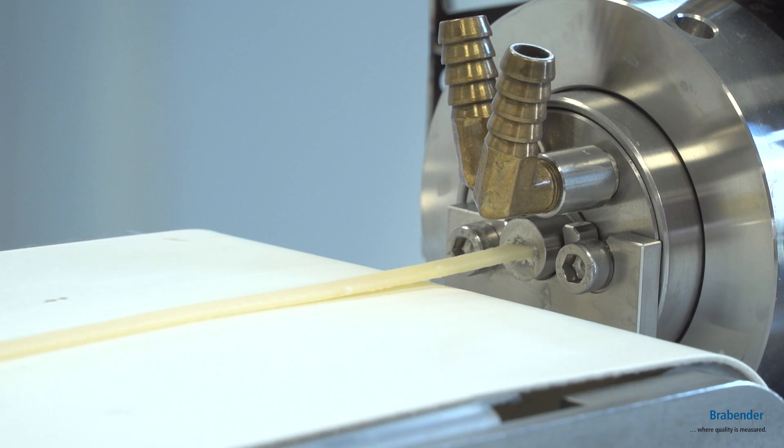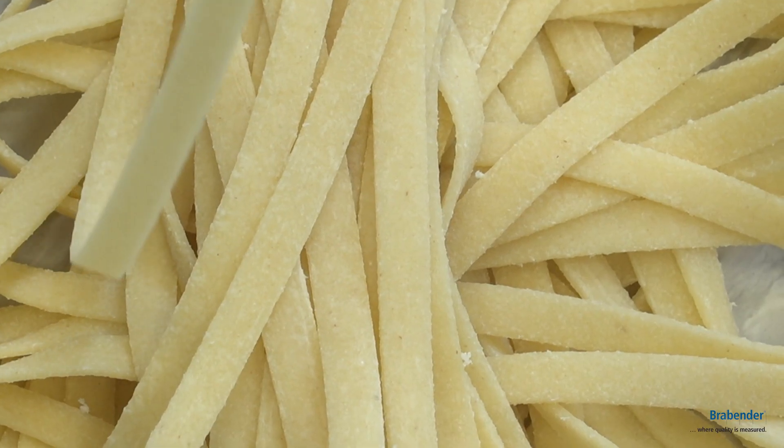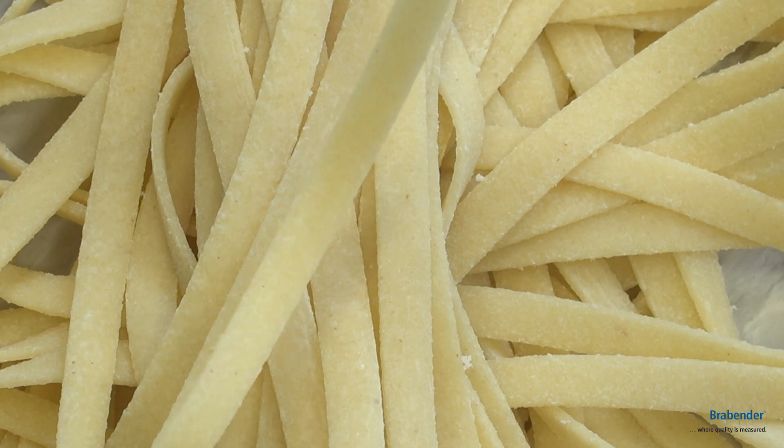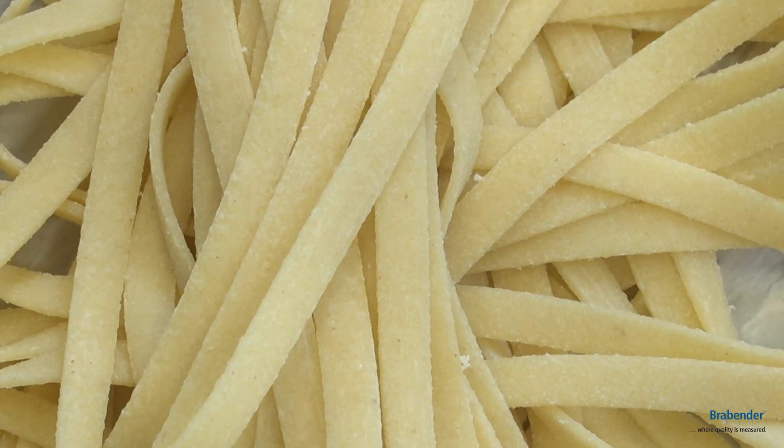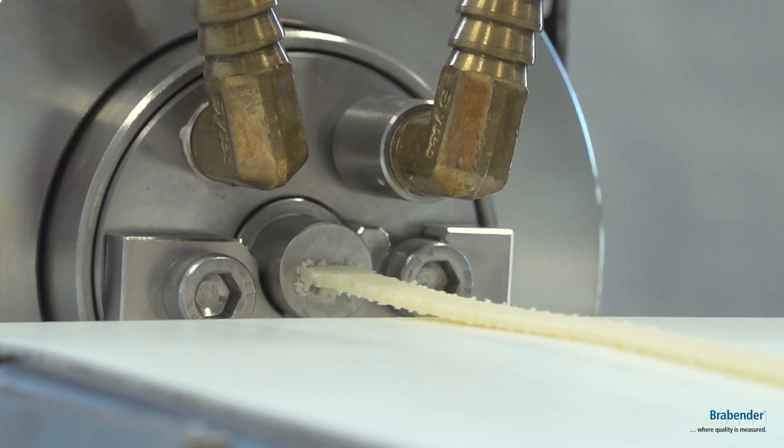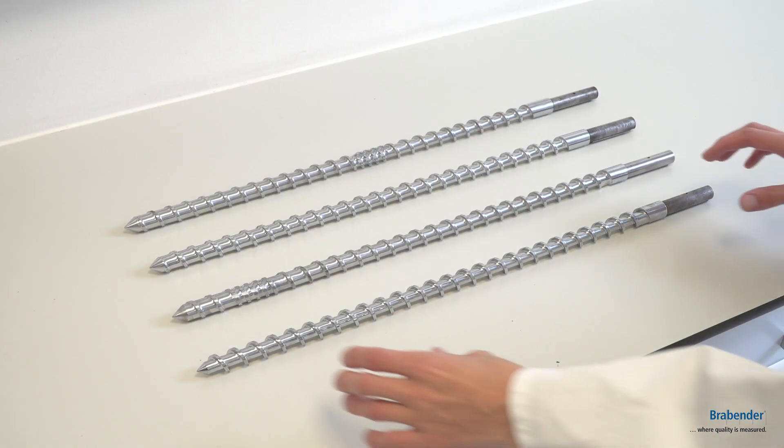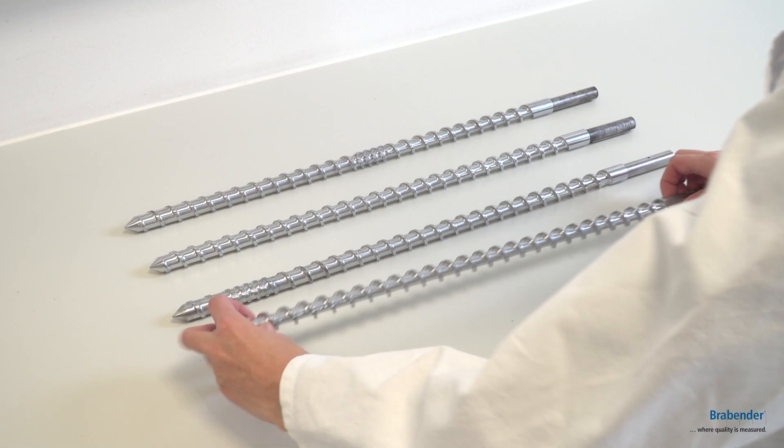By using the KE19, the quality and processability of raw materials and material mixtures can be controlled under different process conditions. With a screw diameter of 19mm and a length of 25D, the extruder is designed for producing small quantities of up to 10kg per hour.